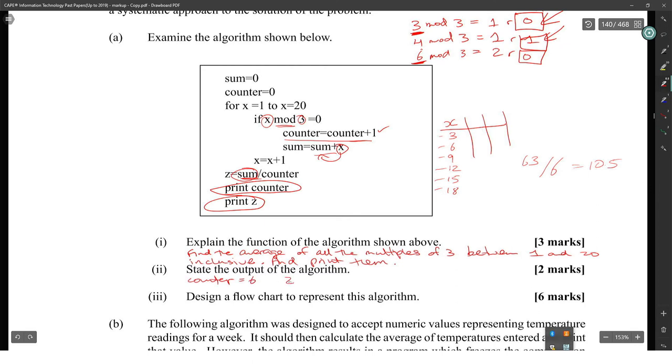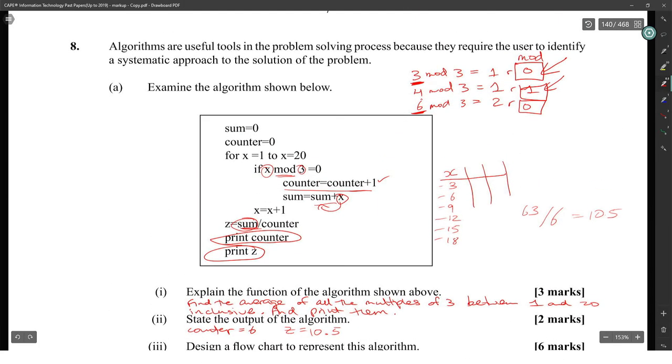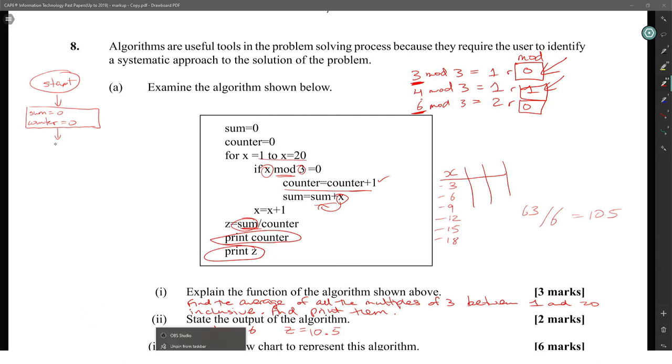Part three: Design a flow chart to represent this algorithm. Let's go flow charting. We have to start with sum equals zero and counter equals zero. We have for x equals 1 to 20, but you can't represent a for loop in a flow chart, so you have to convert it to a while loop. So we set x equals 1 first, then we have a diamond and the diamond is going to be x less than or equal to 20.